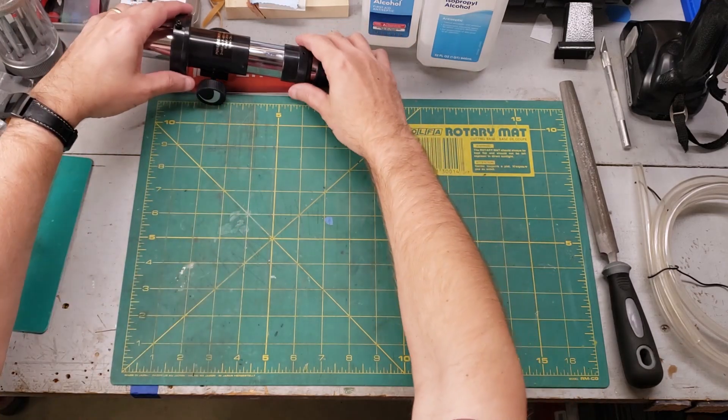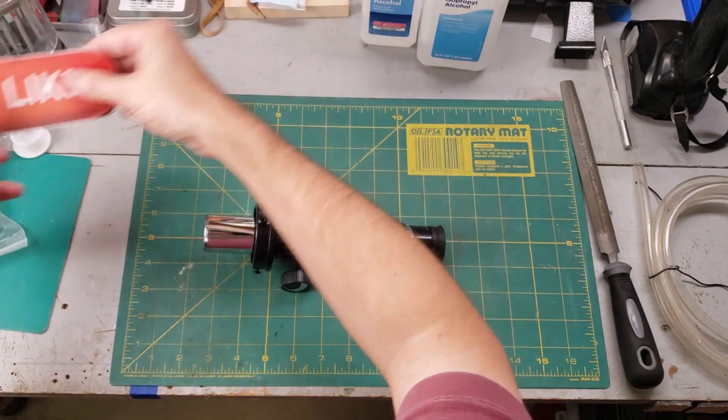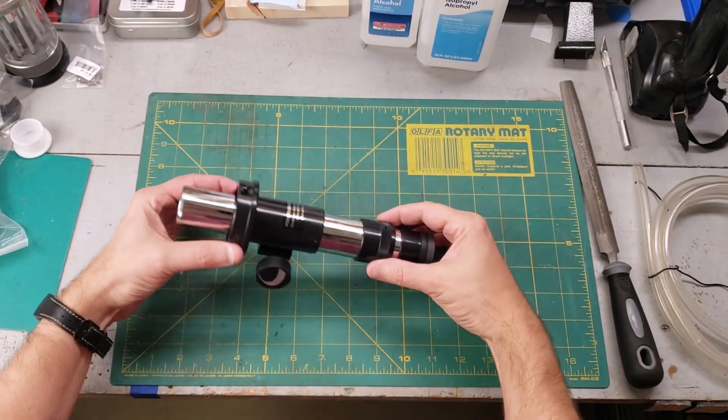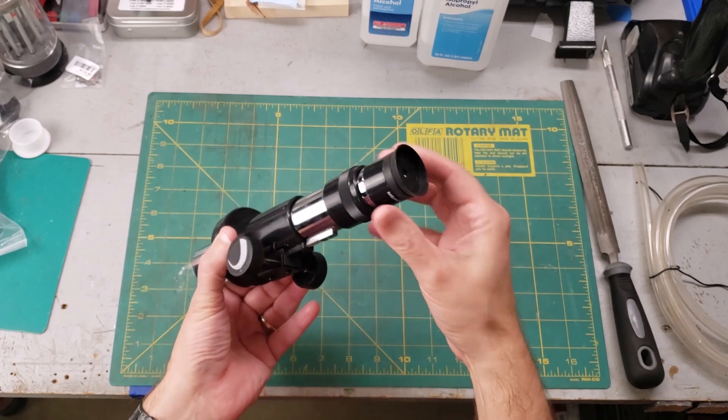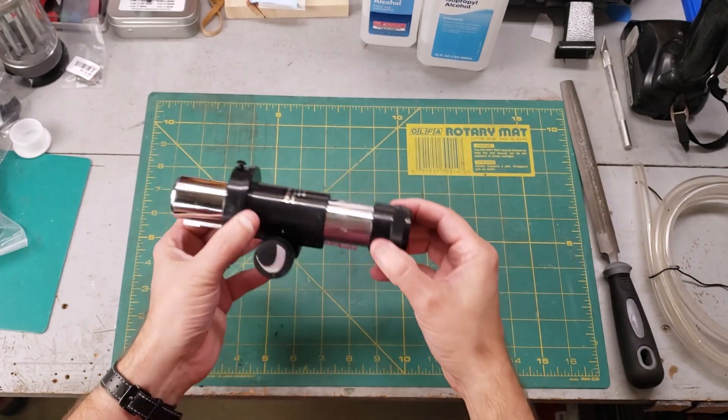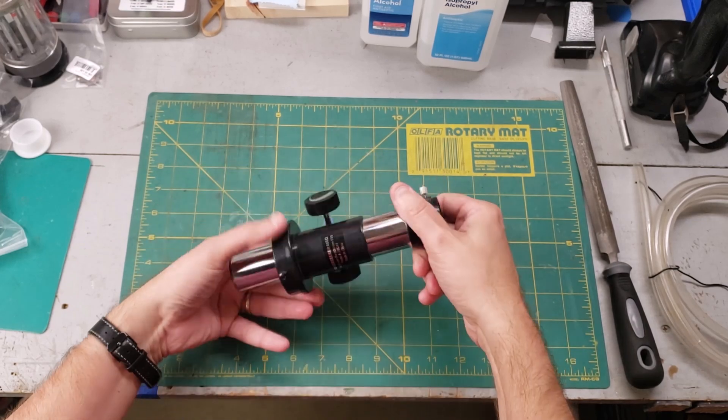This focuser assembly is one that I removed from a broken telescope. Let's remove the eyepiece. It's only held into the telescope tube with these three screws here.